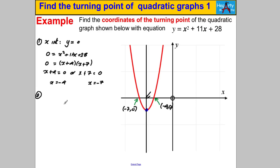Step 2: find exactly halfway between the two x-intercepts to locate the line of symmetry. We average the two x-values: (-4 + -7) ÷ 2 = -11 ÷ 2 = -5.5. So x = -5.5 is the line of symmetry of the curve, and we know the x-coordinate of the turning point is -5.5.